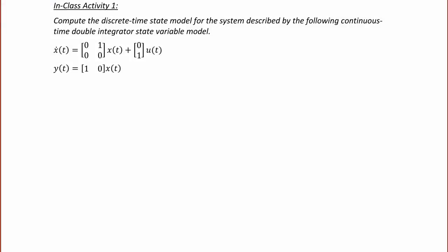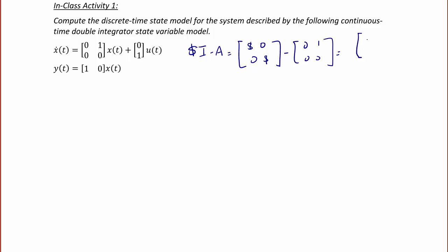The first thing we're going to do is find sI minus A, which equals the matrix [s, 0; 0, s] minus [0, 1; 0, 0], giving sI minus A equals [s, -1; 0, s].